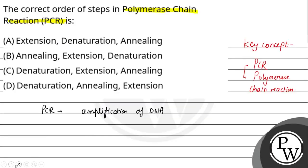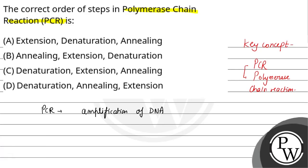So the three steps in order are: first denaturation, which is given in options C and D; second annealing; and finally extension. So the correct answer is only Option D. Hope you understood it well. Best of luck.